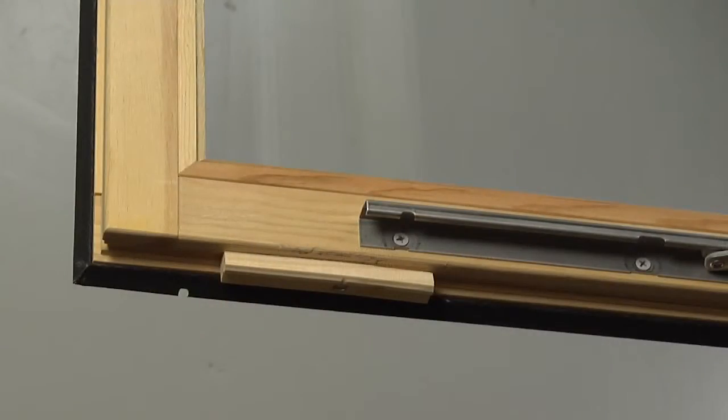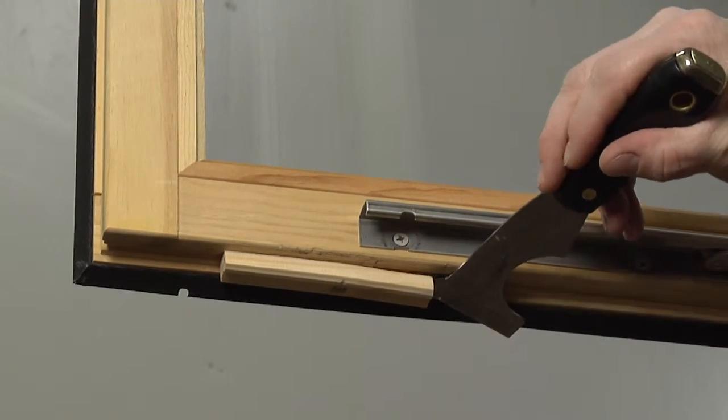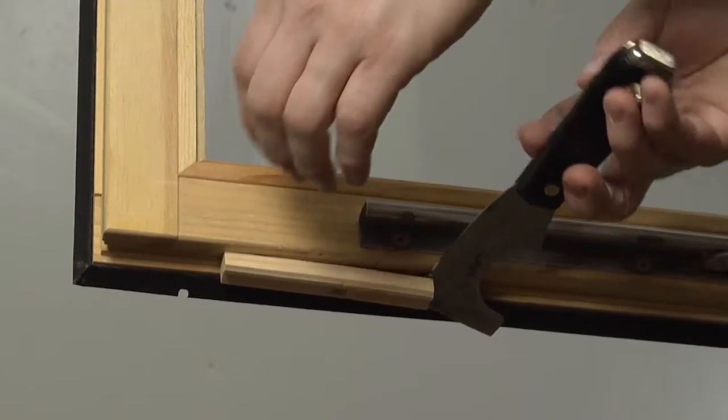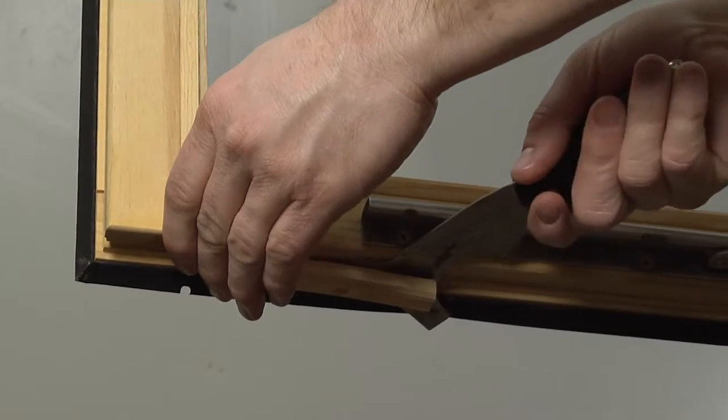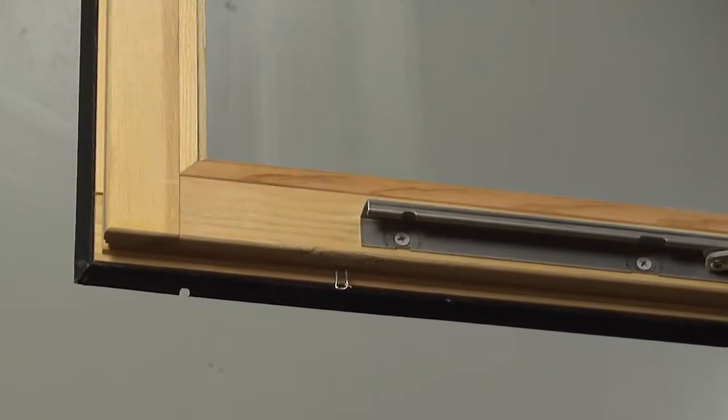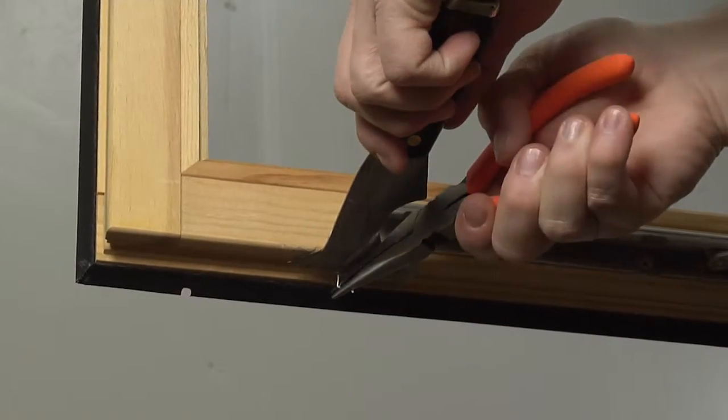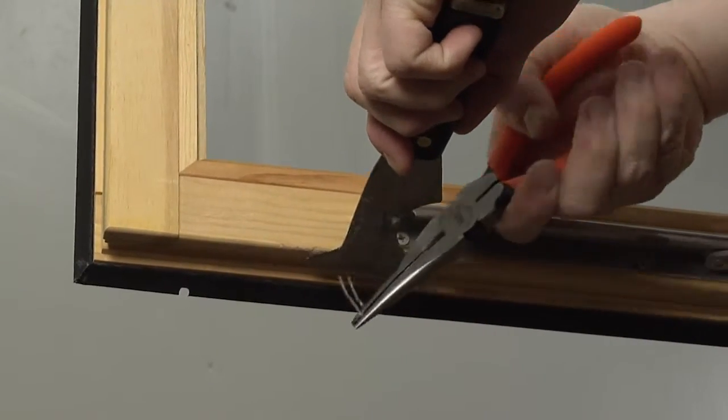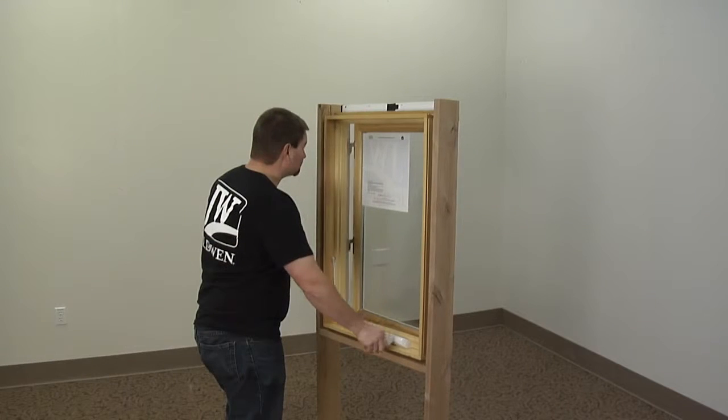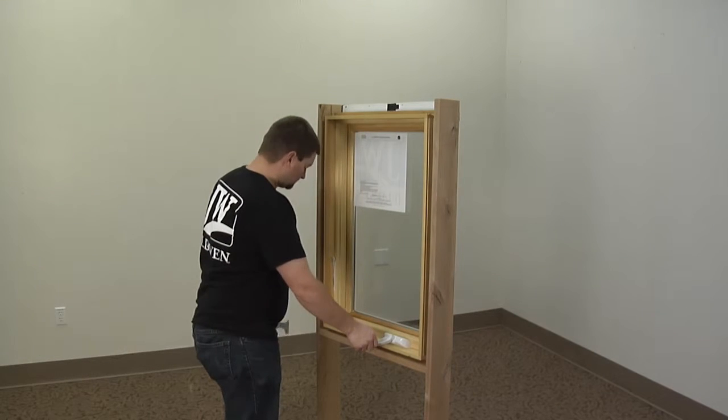Repeat this process for the shipping block on the bottom sash. Finally, close and lock the window to test for operation.